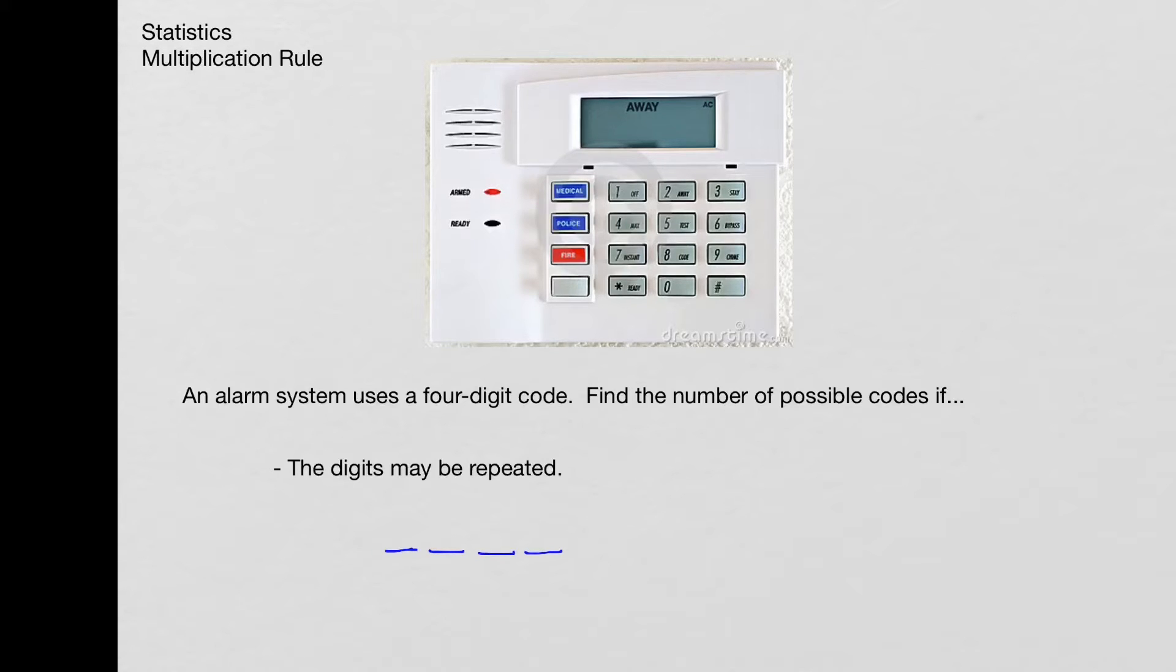So in this case, because the digits may be repeated, we start off with first of all, there are ten possibilities. And how do I know there are ten possibilities? Well, I'm looking at this alarm system in particular, and you can count if you start with zero, one, two, three, and so on. You're going to see that there are ten different digits there. A lot of times people think nine because they think one through nine, but zero counts as well.